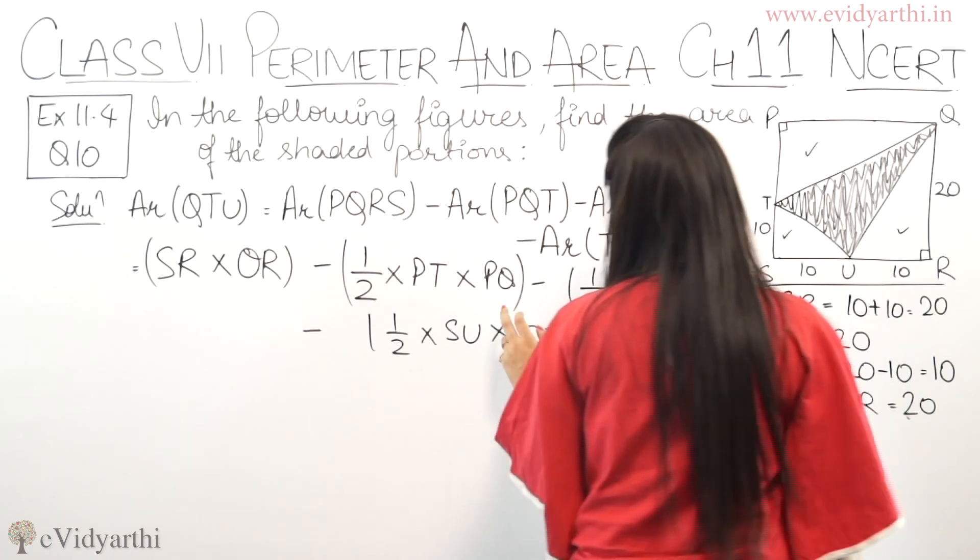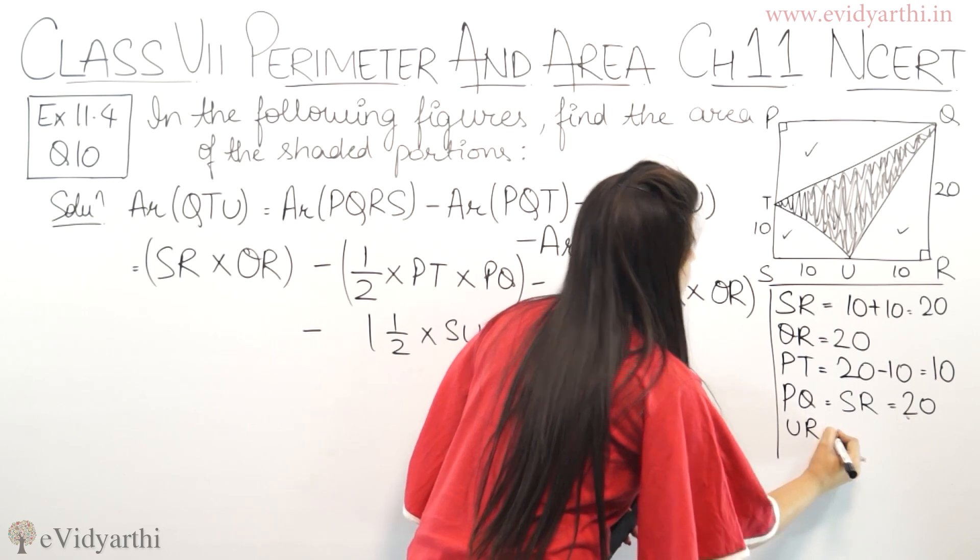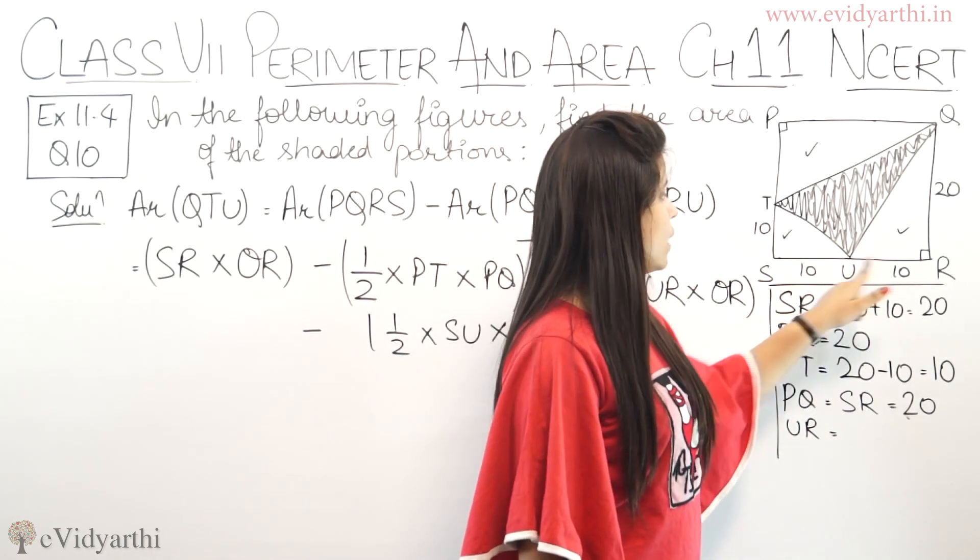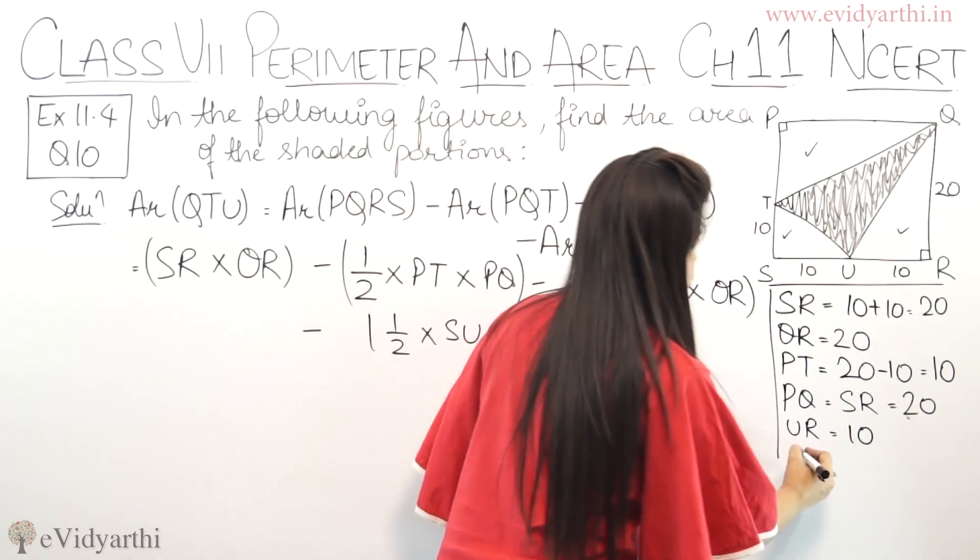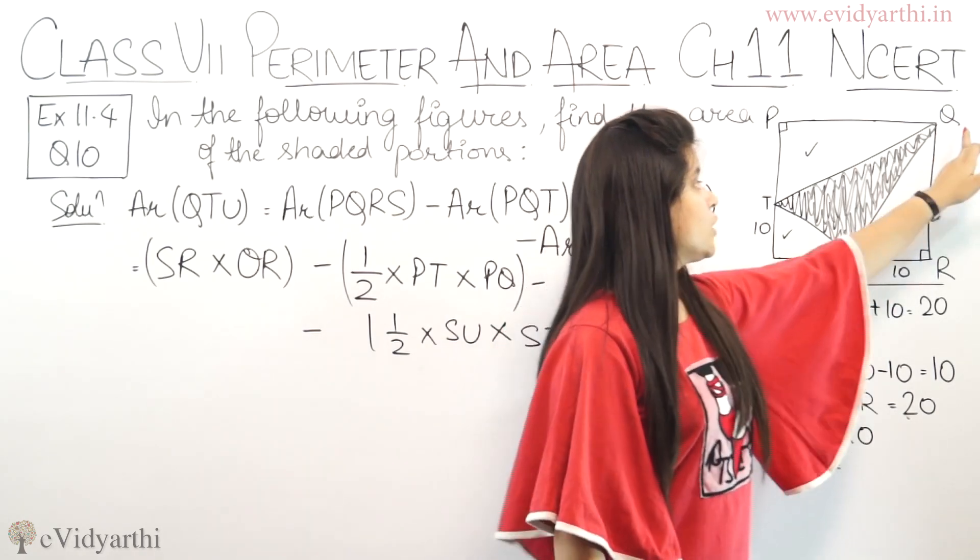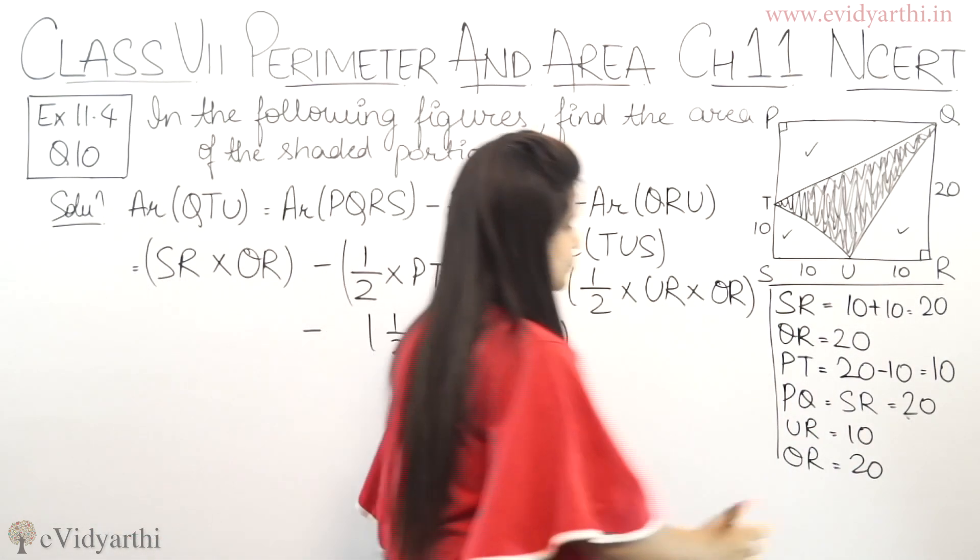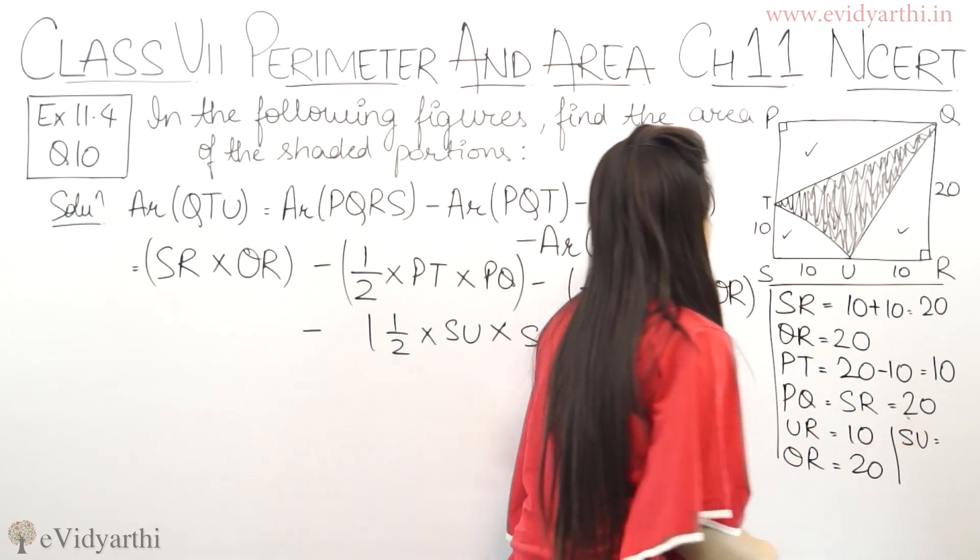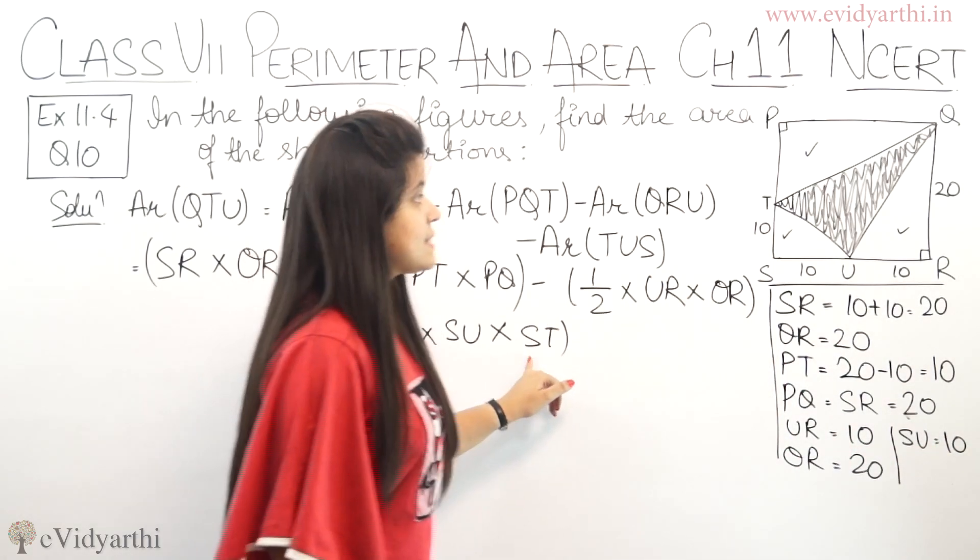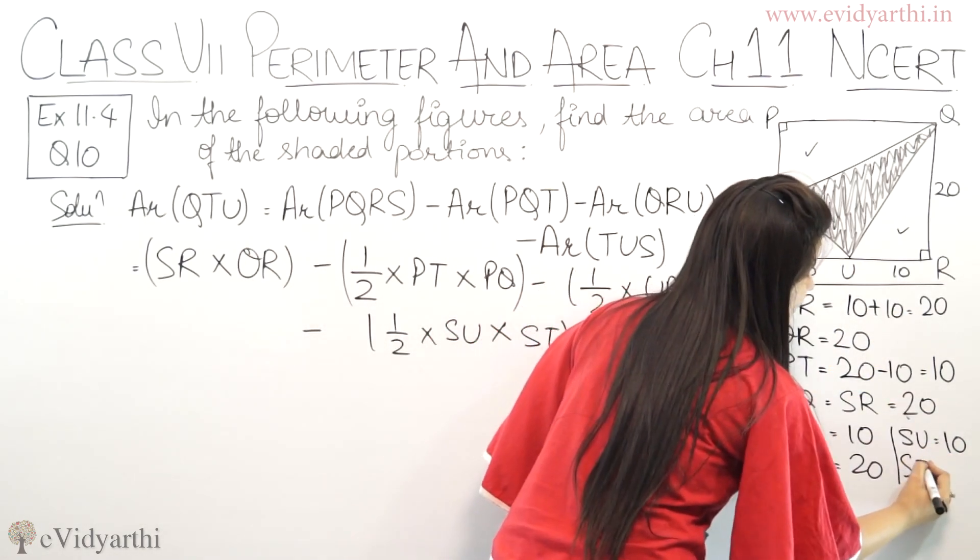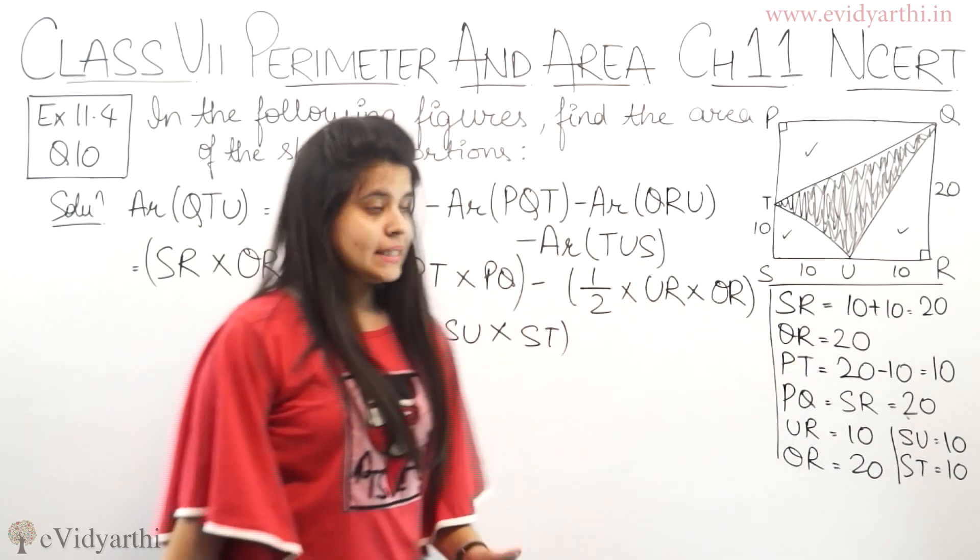Next, UR will be equal to 10, PT. Then we have QR which is 20. SU is 10, given. ST is again given 10. So now all the lengths are known.